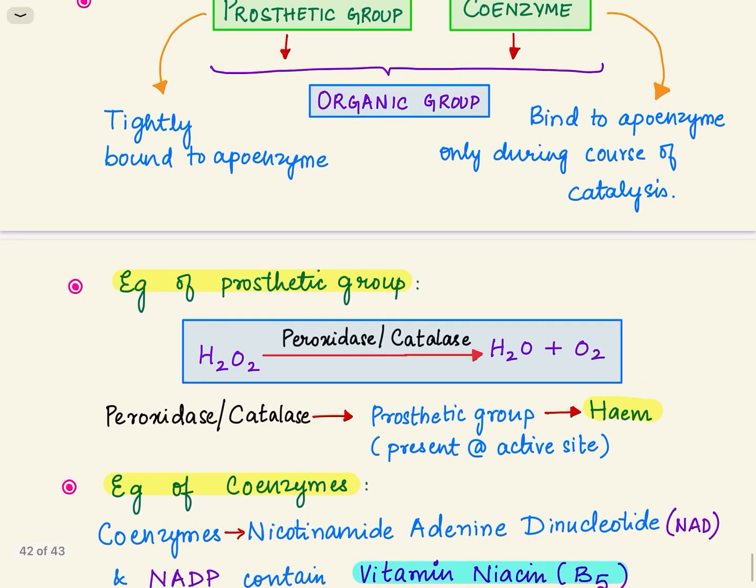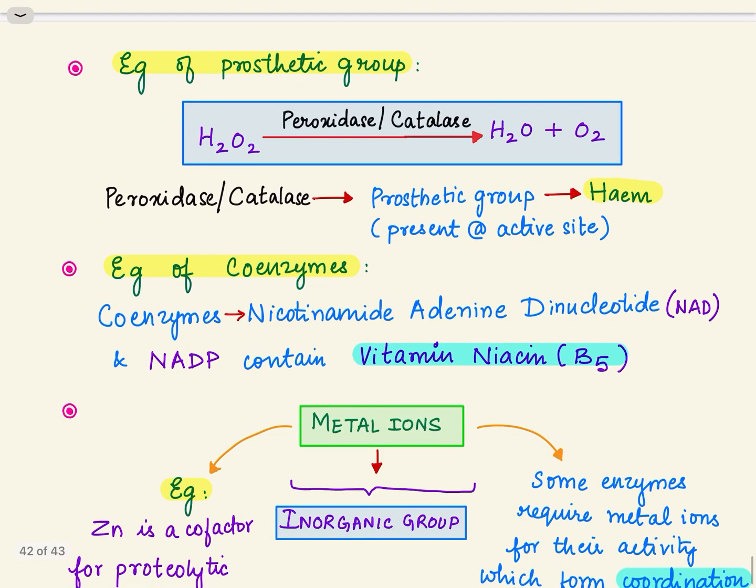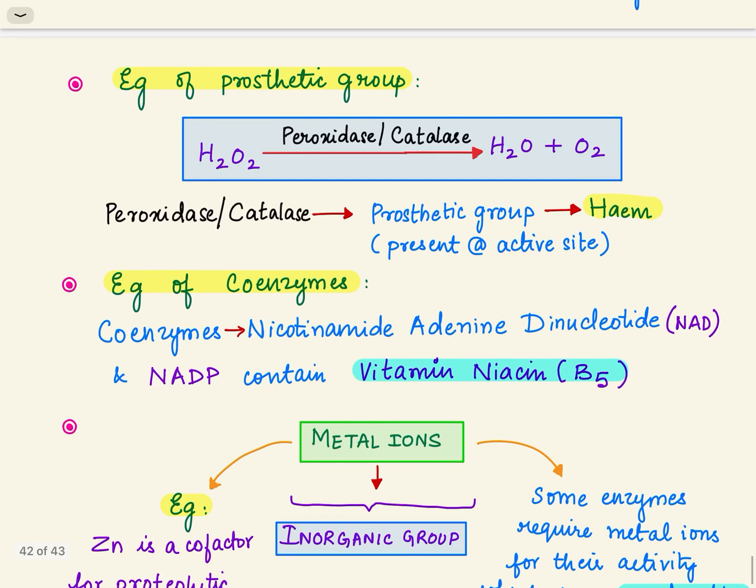The example for prosthetic group is peroxidase or catalase that catalyzes the reaction of conversion of hydrogen peroxide into water and oxygen. Peroxidase contains a prosthetic group known as heme, which is also present in hemoglobin.